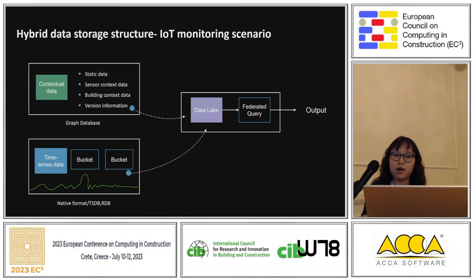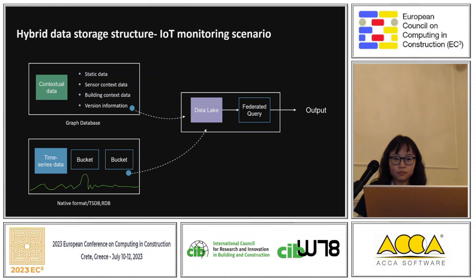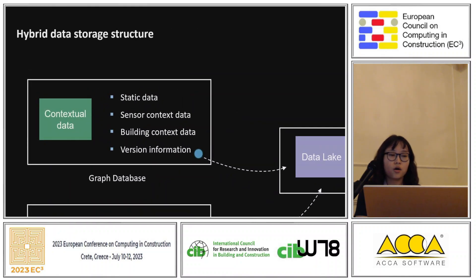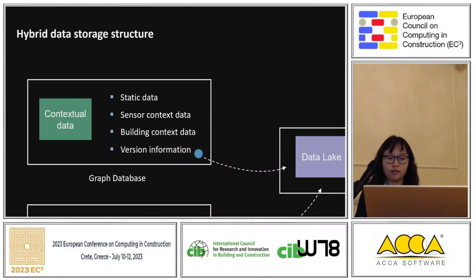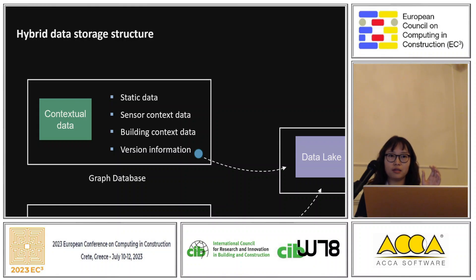We use an IoT-based monitoring scenario to test our hybrid storage structure. We have the contextual data, and because of the heterogeneous data feature, this kind of data we store in the graph database. It is basically a catalog of all this data, with very small data volumes, so it is efficient and interoperable to store it in the graph database.